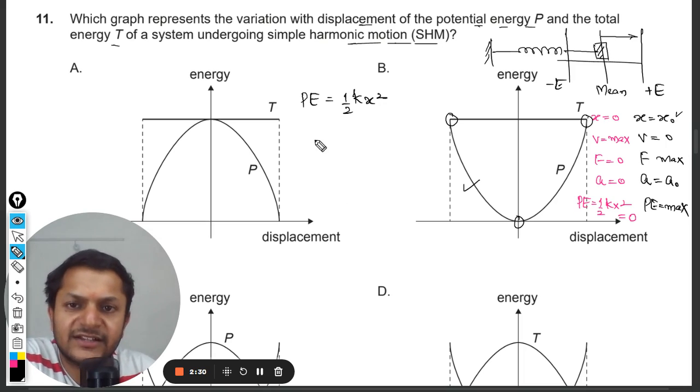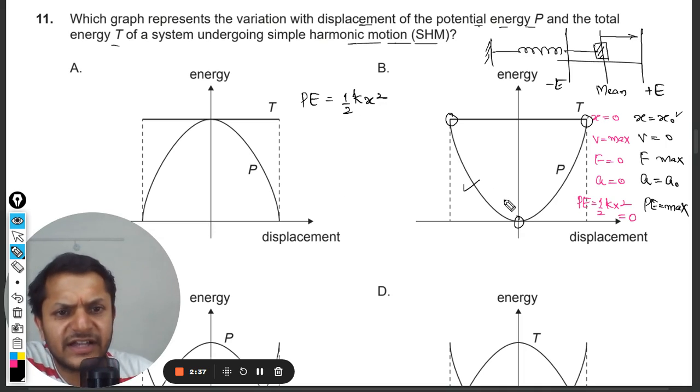Potential energy is half kx squared, so potential energy is having a parabolic variation with respect to displacement. Clearly this graph is correct for the potential energy. A is a wrong option. And what about the total energy now?